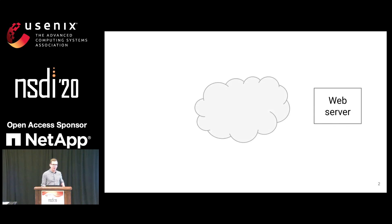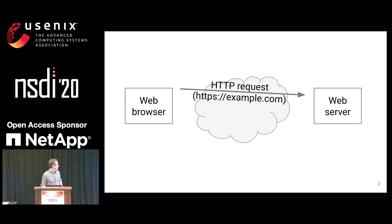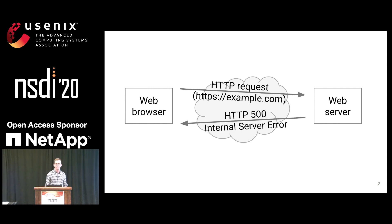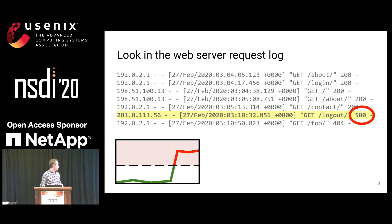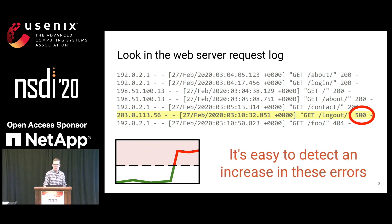If you're a web service operator, you're going to have a web server. Suppose a user of your service issues a request and your server returns a 500, which means your server was unable to fulfill that request. You would look in your web server request log — for every request received, what did you do with it? You'd see the 500s and set up alerting to say, when there's a spike in 500s, email somebody. That's pretty easy because you're looking for a big spike in errors.